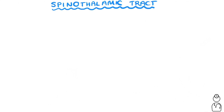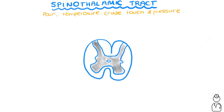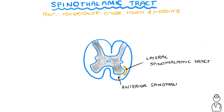The final tract we'll talk about today is the spinothalamic tract, which carries pain, temperature, crude touch, and pressure sensations. The spinothalamic tract is located anterolaterally around the ventral horns of the cord, and that's the reason it can also be known as the anterolateral system.